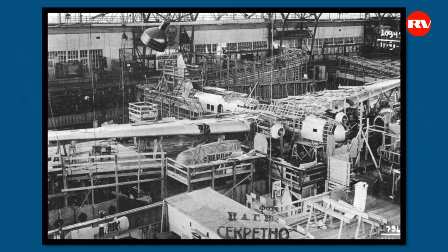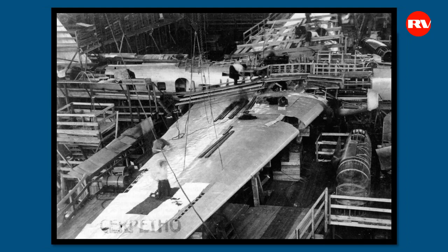In this photo there is a stamp: TsAGI secret. The photo is taken from the internet. The process of forming the first copy of the TB-7, ANT-42 bomber, is underway — in fact, this is the lead aircraft of the PE-8. TB-7 became PE-8 after the death of Petlyakov in 1942, in honor of Petlyakov's merits in the creation of this aircraft. Here is the same TB-7, but from a different angle.